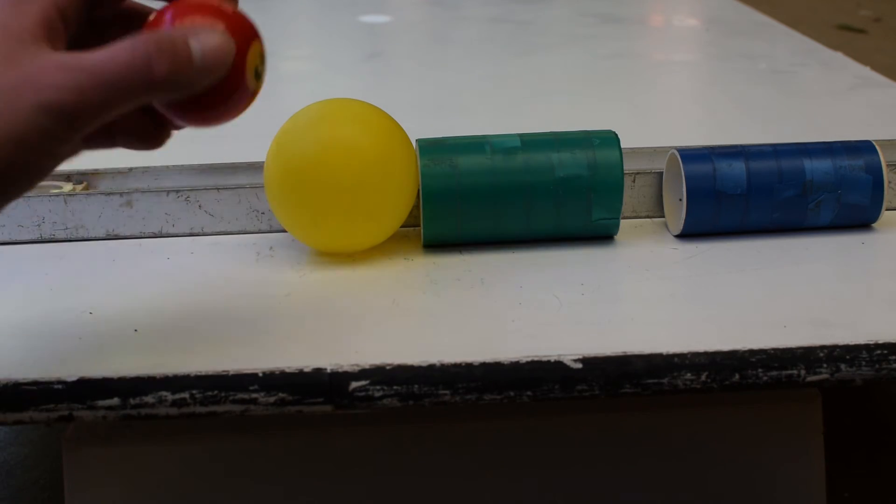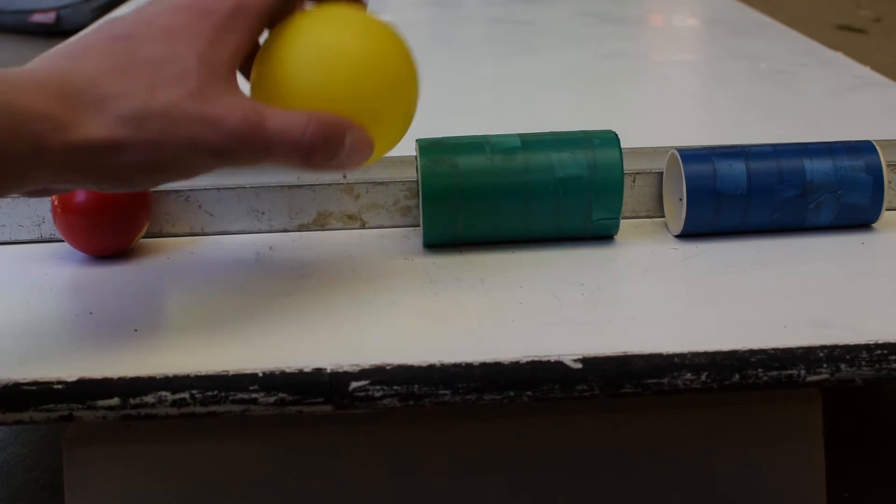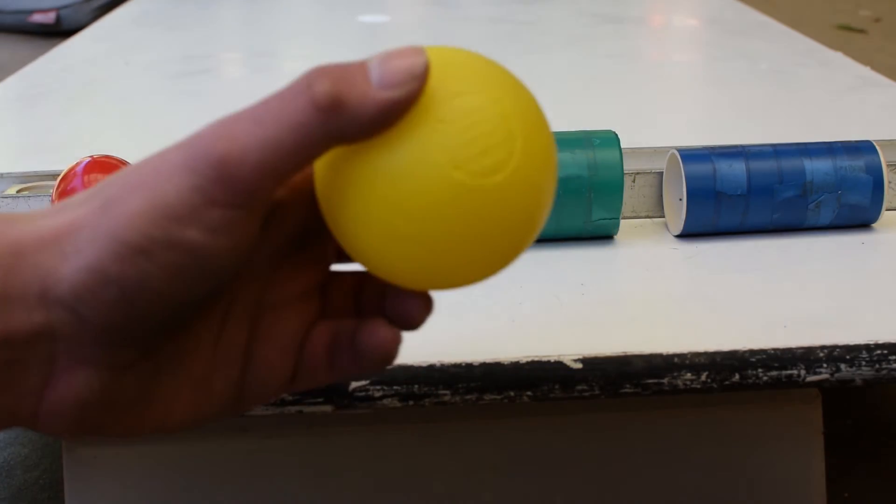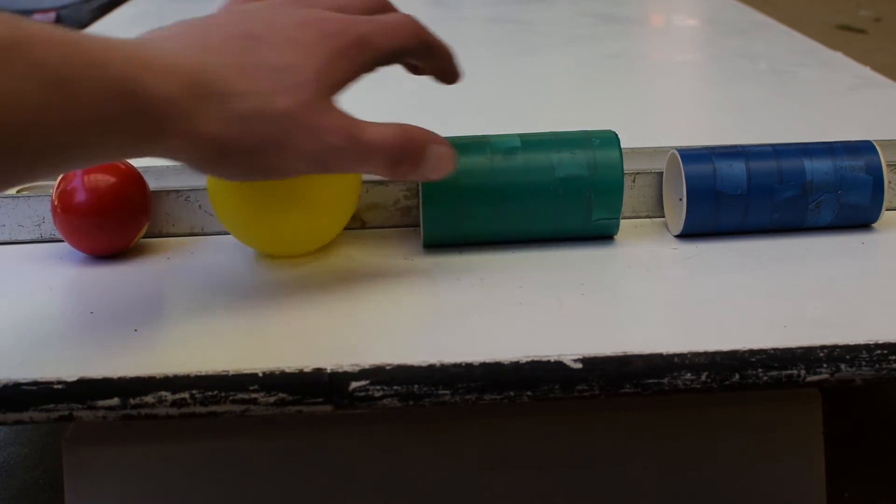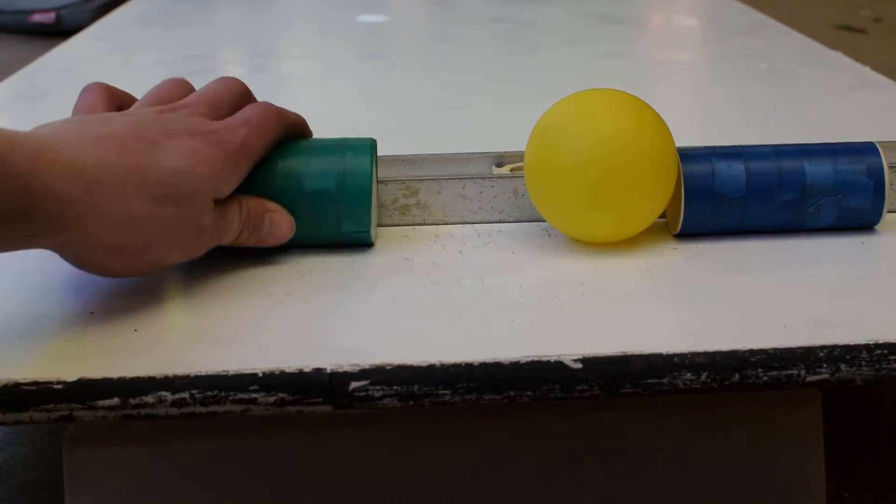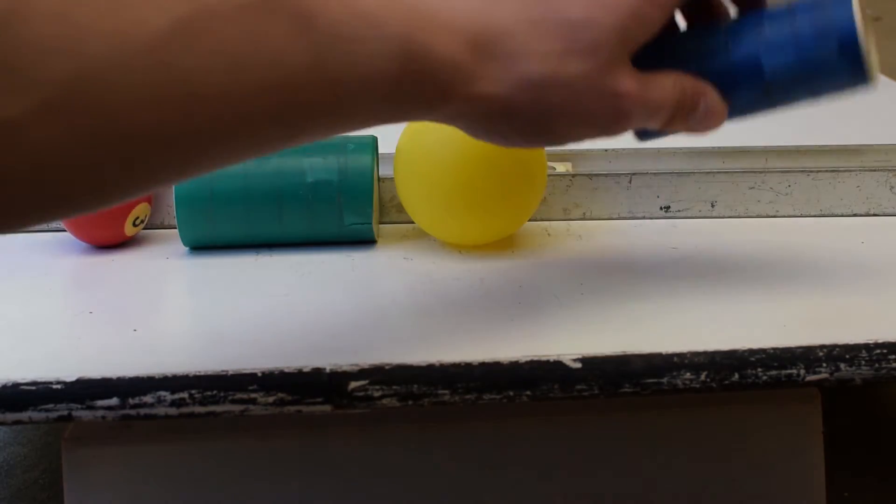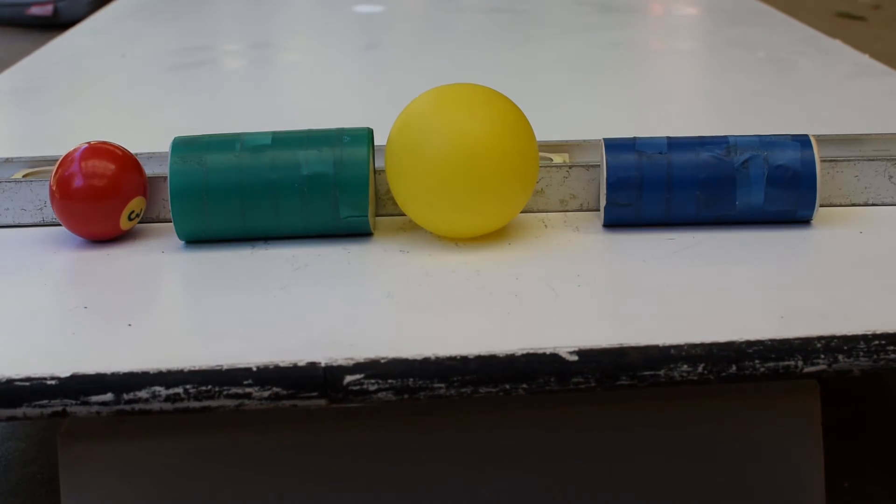I have here a solid sphere, a hollow sphere, a solid cylinder, and a hollow cylinder that I'm going to roll down a ramp. Do you think they will all roll at the same rate, or at a different rate? And if so, in what order? Let's find out.